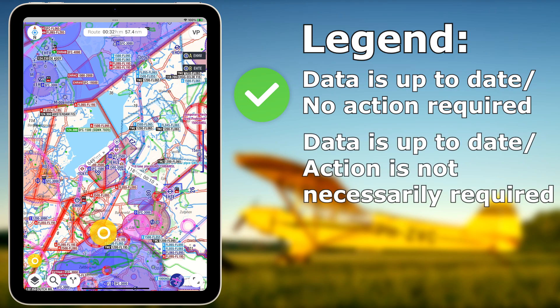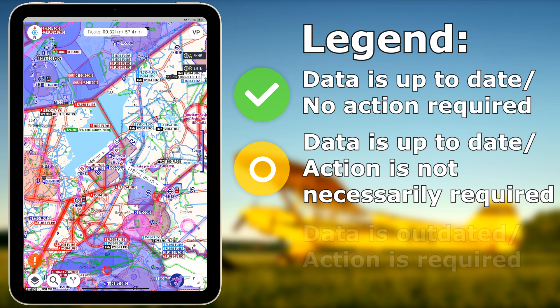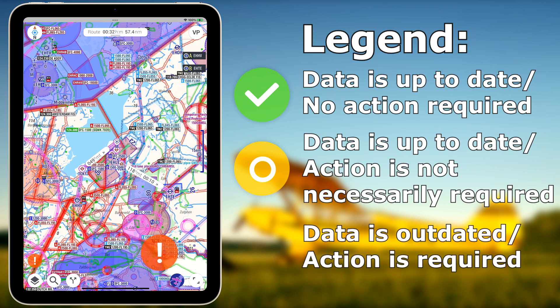When certain information becomes outdated or when action is required, you would like to know about it immediately. In the case of a yellow circle, everything is still okay — something can be done in terms of the app configuration, but action is not necessarily required. However, if data becomes outdated or any other action is required, the status card will turn red.